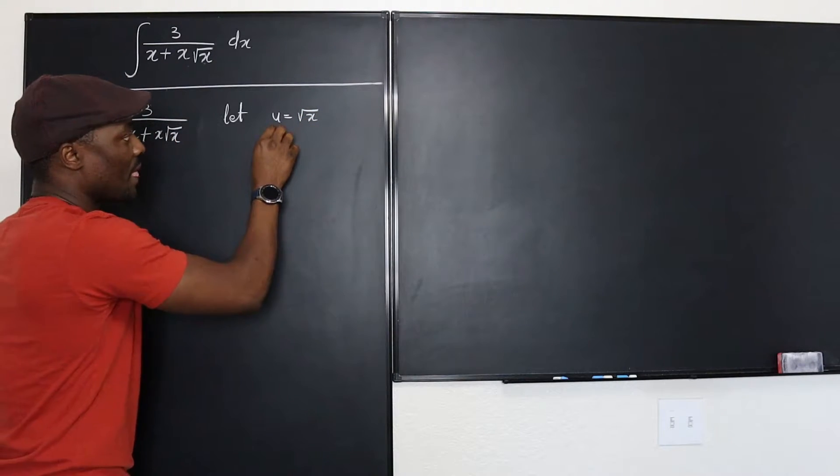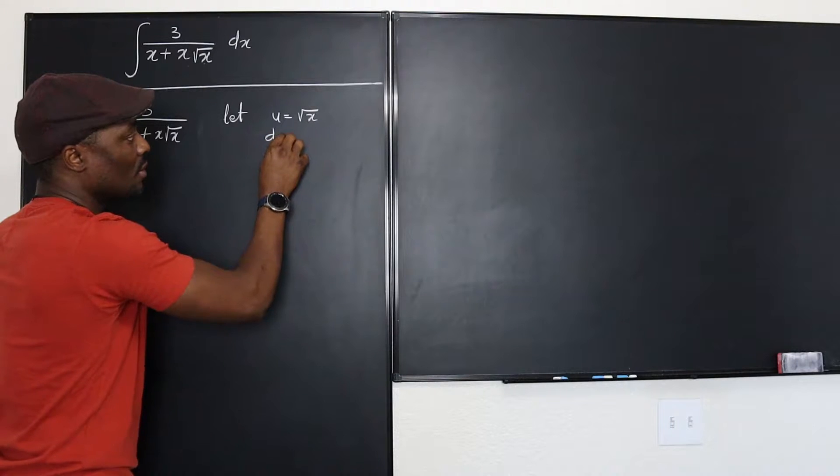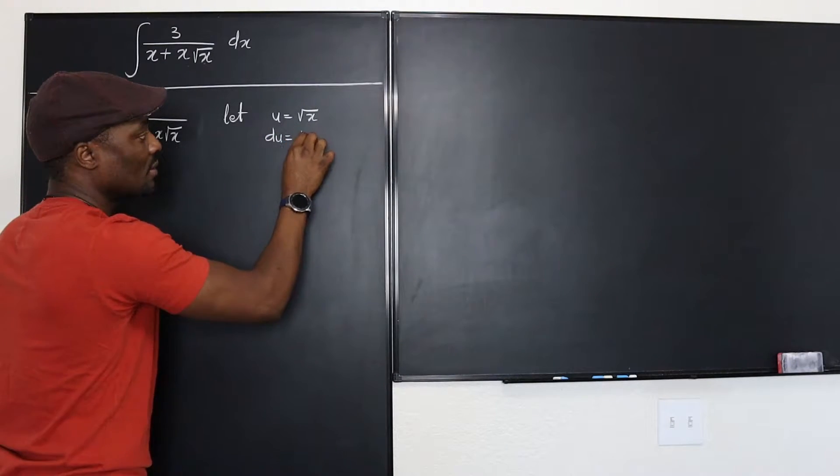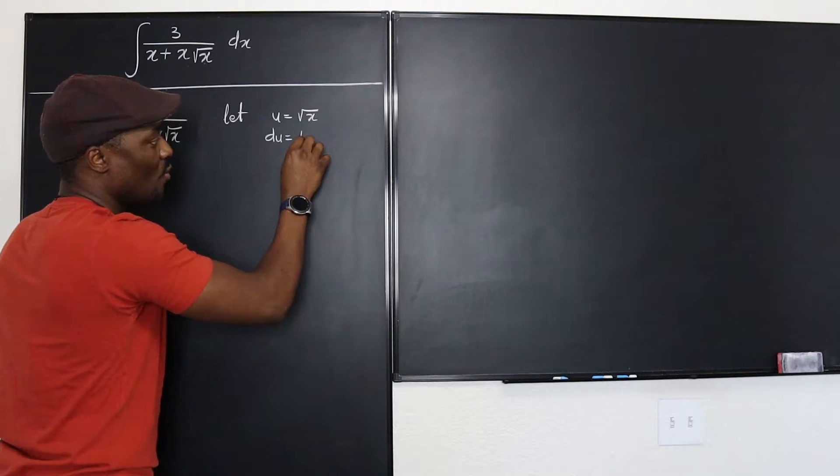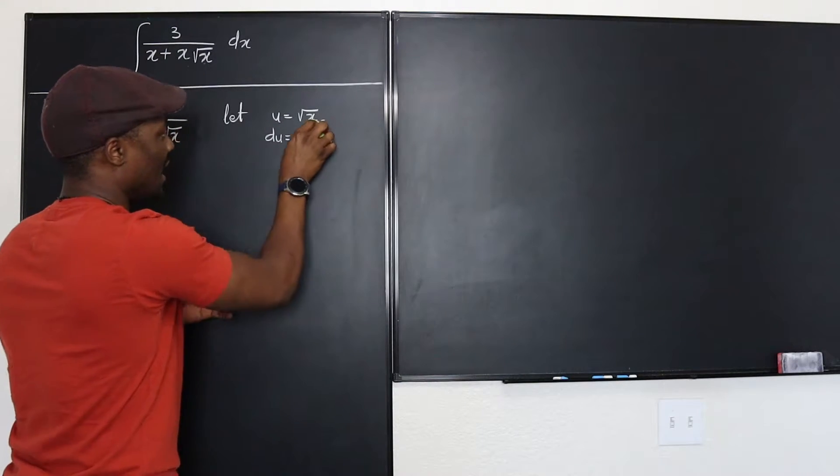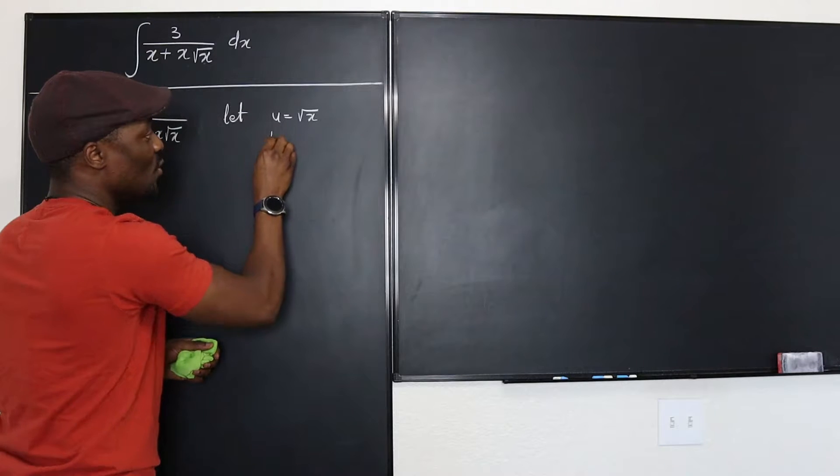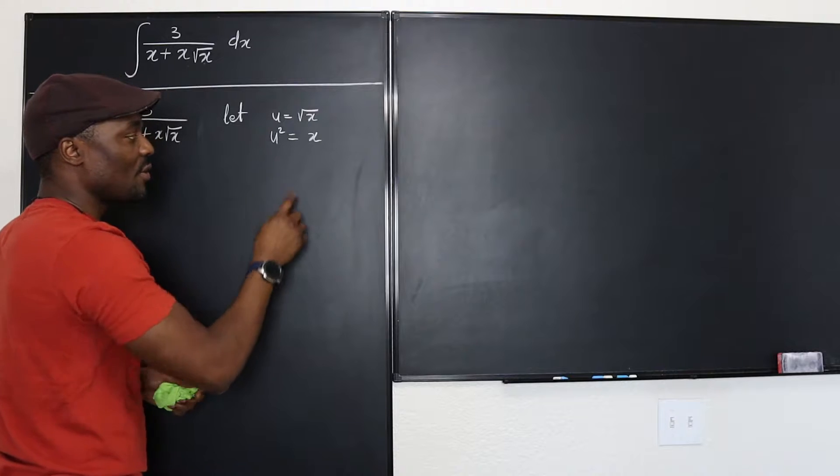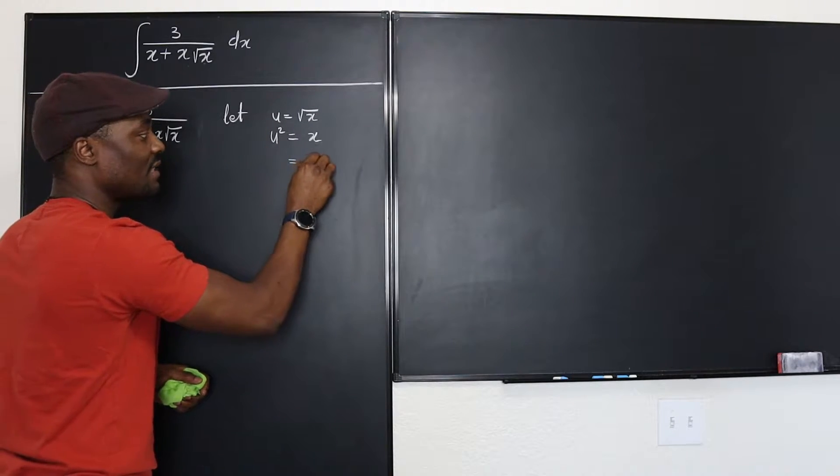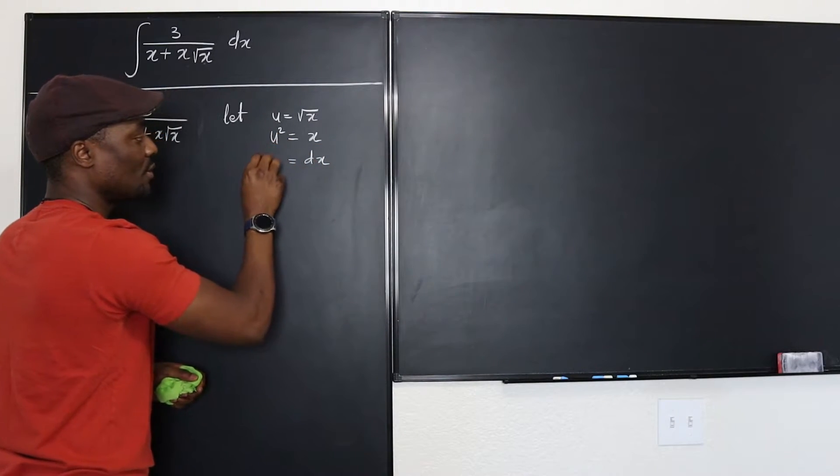So du will be equal to... let's do it this way: u squared will be equal to x. Now you can differentiate both and then you have dx will be equal to 2u du.